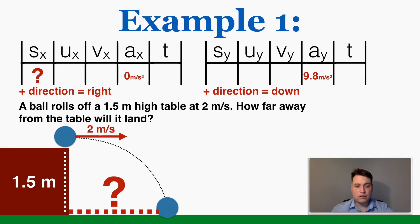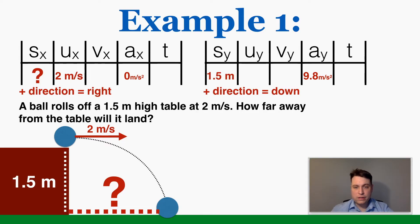Vertically it moves 1.5 meters, so the y displacement is positive 1.5 meters. In the x direction it's moving at 2 meters per second horizontally, so the initial x velocity is positive 2 m/s. Because it's moving perfectly horizontally at the start, it's not moving up or down at all, so the initial y velocity is zero. That's all the information we can get from the problem. Most of the challenge of projectile motion comes from reading out that information — after you do that, the rest is straightforward.